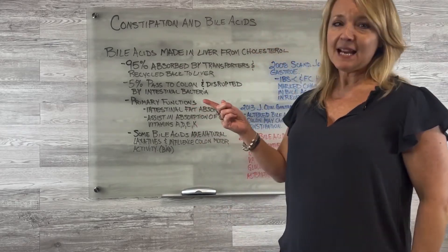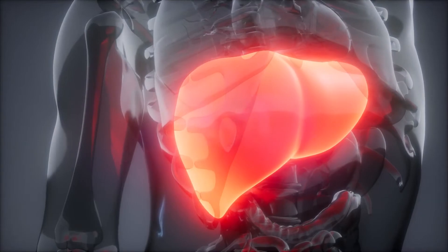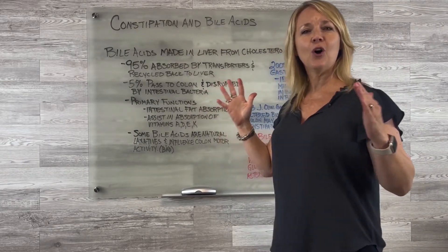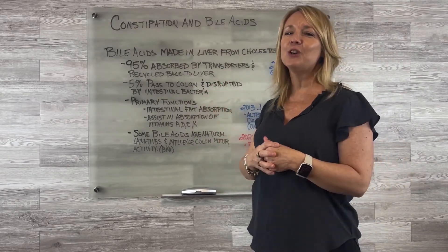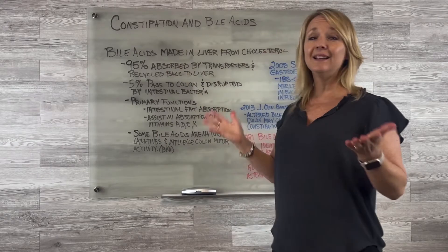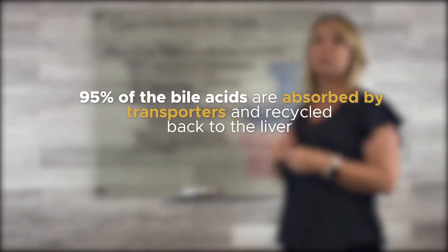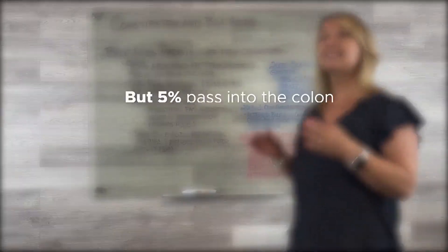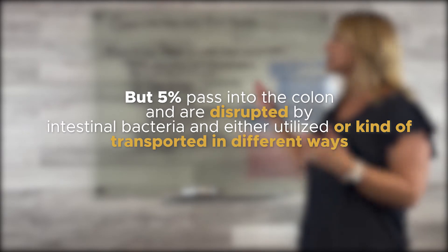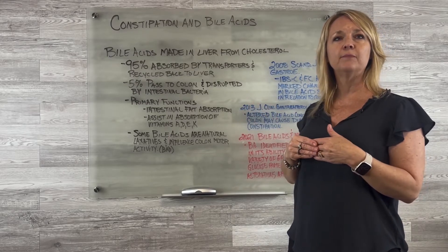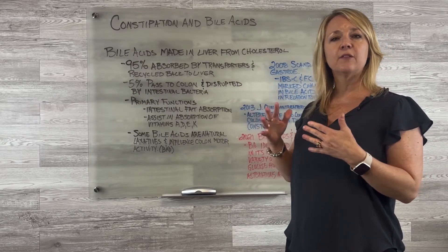Bile acids are made in the liver from cholesterol — many of you may not realize that. Cholesterol is not all bad; it is needed in various different roles, which is why your doctor doesn't want cholesterol too low. 95% of bile acids are absorbed by transporters and recycled back to the liver, but 5% pass into the colon and are disrupted by intestinal bacteria and either utilized or transported in different ways.